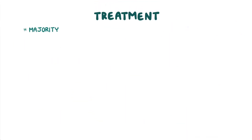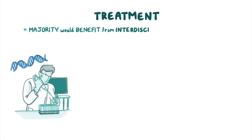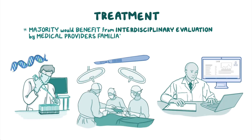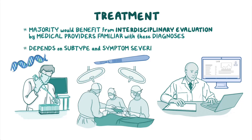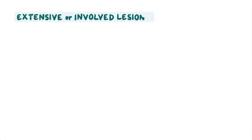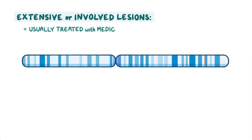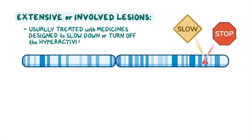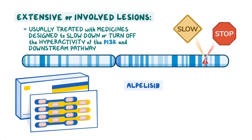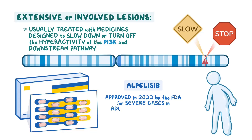The majority of people with PROS would benefit from interdisciplinary evaluation by medical providers familiar with these diagnoses. The treatment of PROS depends on the subtype and the symptom severity. Extensive or involved lesions are usually treated with medicines designed to slow down or turn off the hyperactivity of the PI3K and the downstream pathway. Alpelisib was approved in 2022 by the FDA as a treatment for severe cases of PROS in adults and children 2 years of age or older.